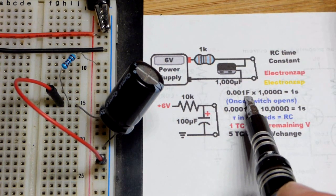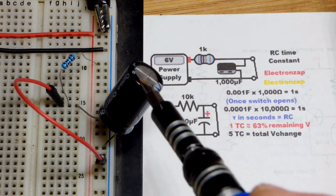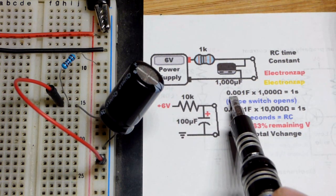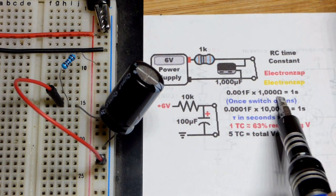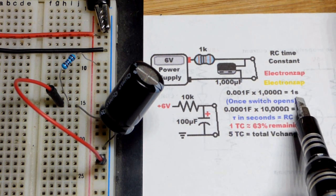And to calculate that, you take the capacitance in farads. This is a 1,000 microfarad capacitor, same as 0.001 farad or one-thousandth of a farad. So if you multiply that by 1,000 ohms, you get one second.